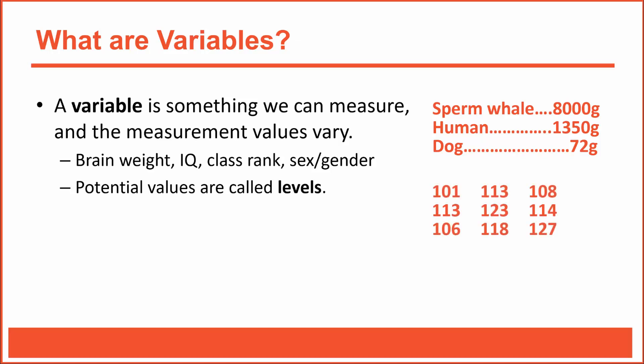IQ is another example of a variable. Here we see IQ measurements for nine different people, with several different levels of that IQ variable listed. When we collect data from people, we often want to know who they are. If I were studying college students, I'd probably want to know their class rank—freshman, sophomore, junior, senior. We used to ask about biological sex, male or female, but now we're more likely to ask about gender, which is more personally defined. For example, researchers might ask: do you describe yourself as a man, a woman, or in some other way? The variable is gender, and we can see three levels listed.